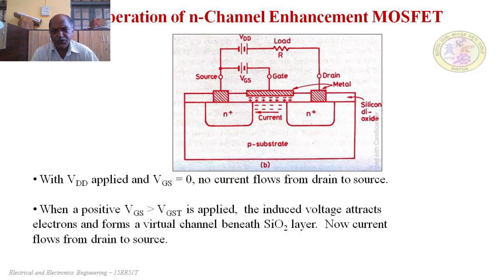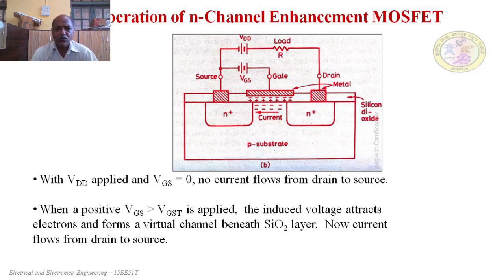To study the operation of N-channel enhancement type MOSFET, the layer diagram with external connections is shown in this slide with a drain-to-source voltage VDD of certain proper magnitude. If gate-to-source voltage is zero, there will not be current through the channel because there is no channel formed between source and drain. As the gate-to-source voltage increases, accumulation of electrons below the oxide layer increases. When the gate-to-source voltage reaches the threshold voltage VT, a certain minimum thickness channel is formed, current starts flowing, and the device is in the ON state. If gate-to-source voltage increases further, channel width increases, more charge enters, and current through the device increases gradually.